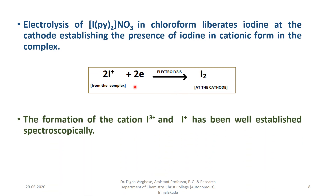The formation of trivalent iodine (I³⁺) and monovalent iodine (I⁺) has been well established spectroscopically. We can see the monovalent and trivalent iodine formation from various reactions and experiments, and these can be confirmed from spectroscopic results.